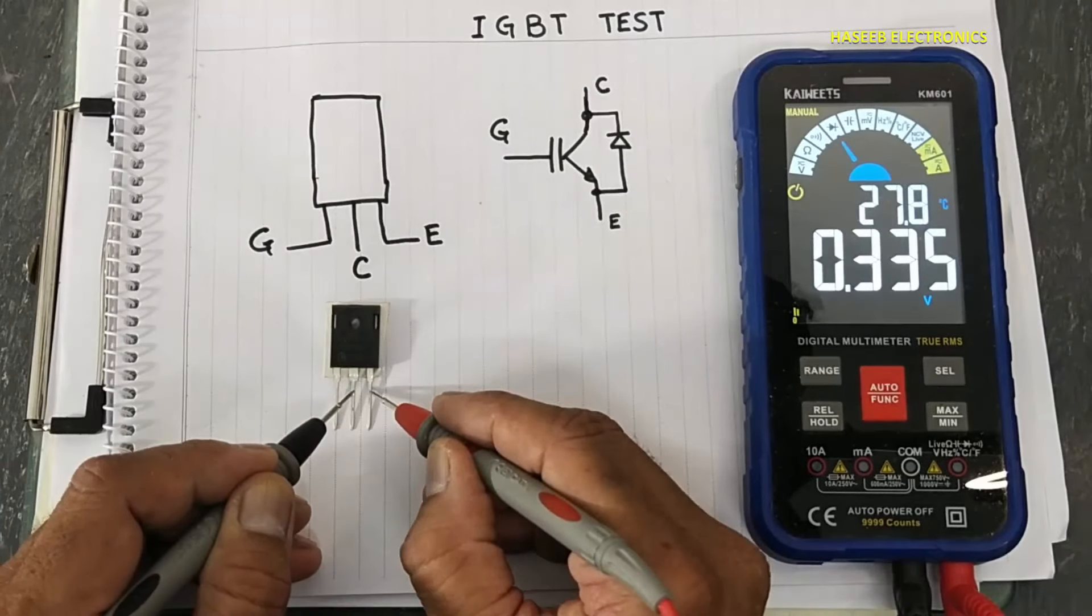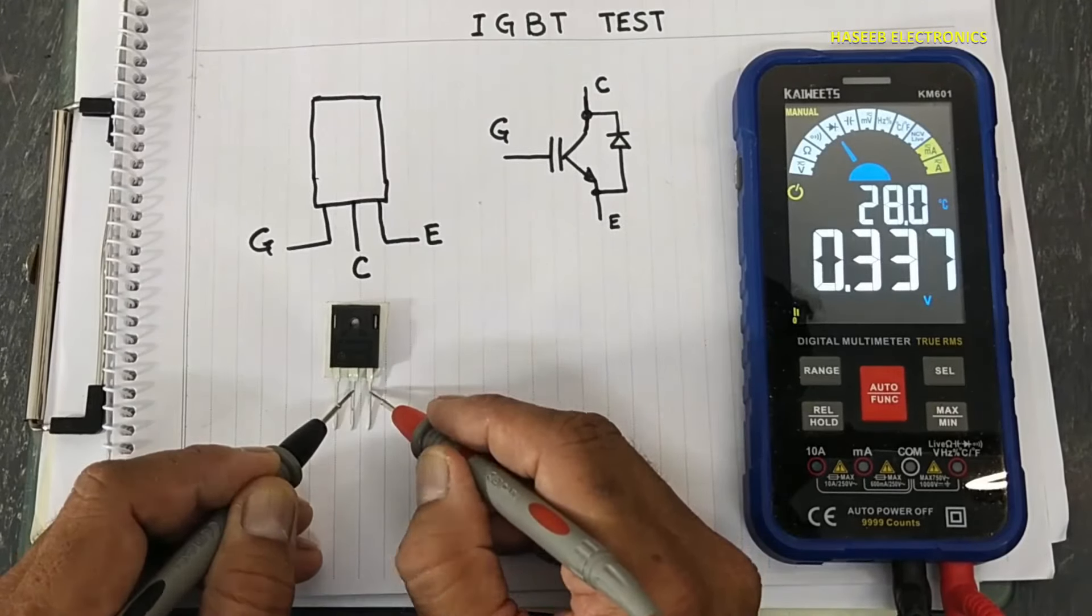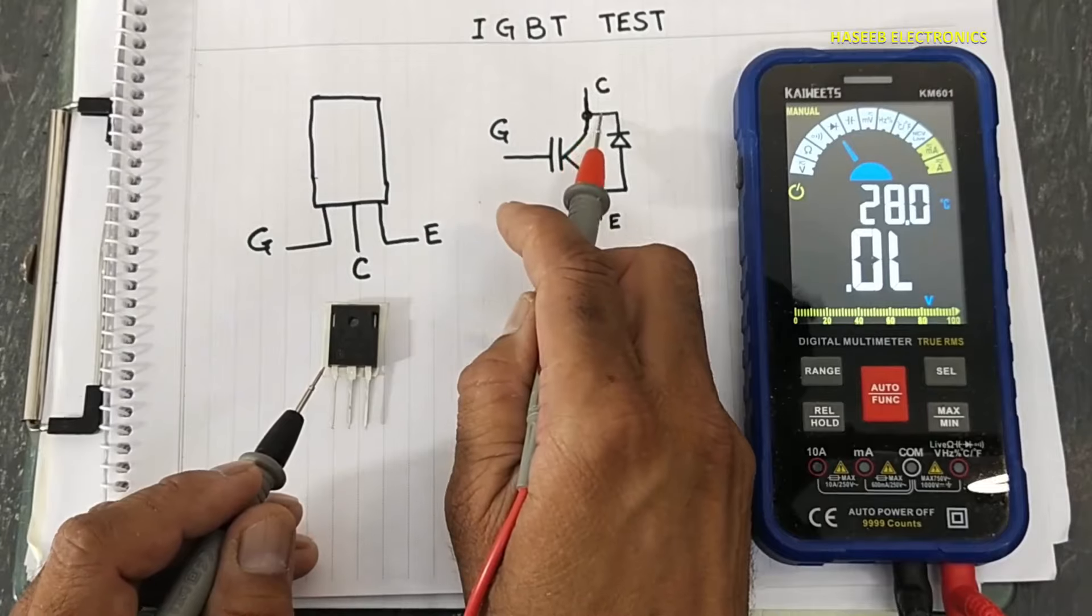Why? Because now we have two paths in parallel: diode path and this channel path.